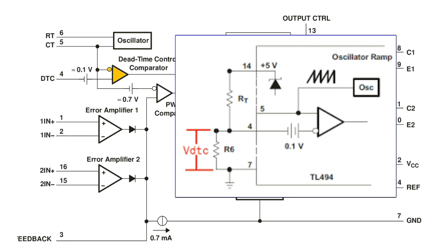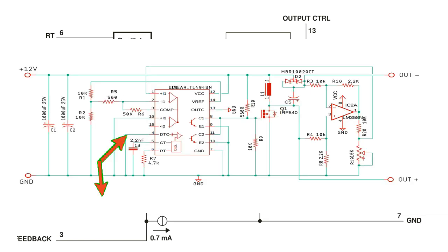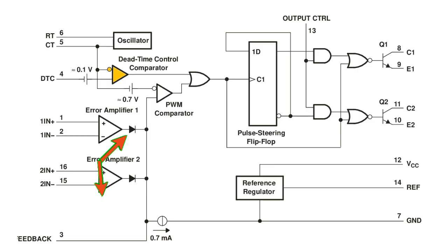Note: an internal offset of 110 millivolts ensures a minimum dead time of 3% with a dead time control input grounded.